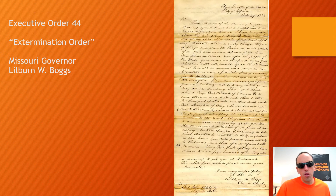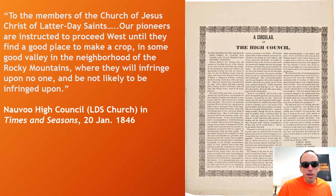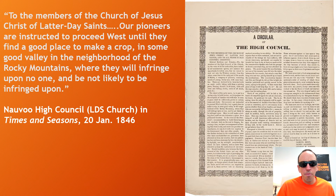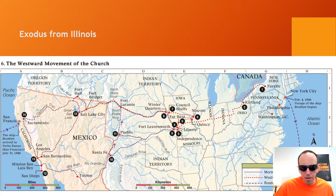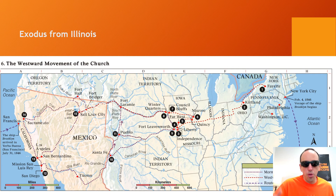A little review connecting to Utah Studies: there was something called Order 44 where the Mormons had to leave. They went up to Nauvoo, Illinois, then decided to leave there and head out west to a place where, in their words, they 'will infringe upon no one and be not likely to be infringed upon.' When they're coming out to what is today Salt Lake City, this was Mexico at the time. The Mexican-American War changes that — the Treaty of Guadalupe Hidalgo makes this part of the United States.